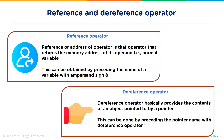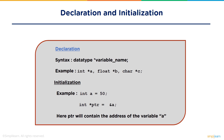To declare a pointer, first we write the data type, then the name of the variable with an asterisk sign. For example: int *a, float *b, char *c. If we want to store the address into a pointer, we write: int *ptr = &a, which means ptr will contain the address of the variable a.